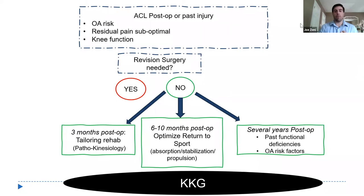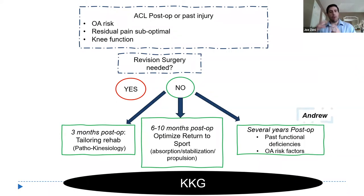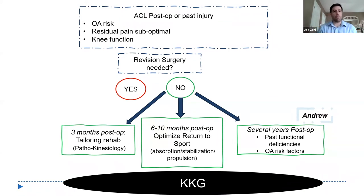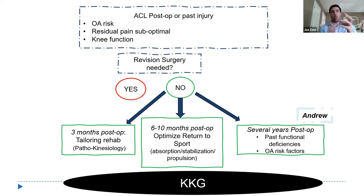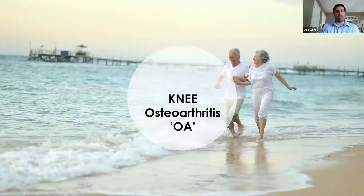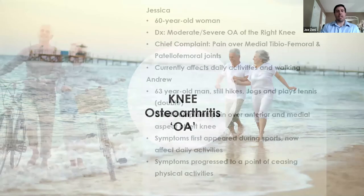Finally, Andrew is several years post-op with functional deficits and residual pain. My concern is addressing the residual pain, which may have a movement component, but also reducing the risk of OA progression — identifying biomechanical markers contributing to current pain and checking for abnormal biomechanics that may contribute to OA worsening. Things like varus thrust or tibial rotation are what I want to address in a patient like Andrew, so I would put him through the Knee KG as well.